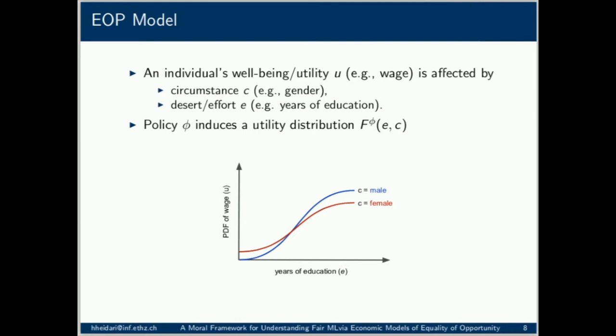I should emphasize that economic research refers to E as effort for the sake of concreteness and brevity, but E is meant to summarize all accountability factors — those that are viewed as legitimate sources of inequality. An EOP policy will ensure that an individual's utility will be, to the extent possible, only a function of their effort and not their circumstances.